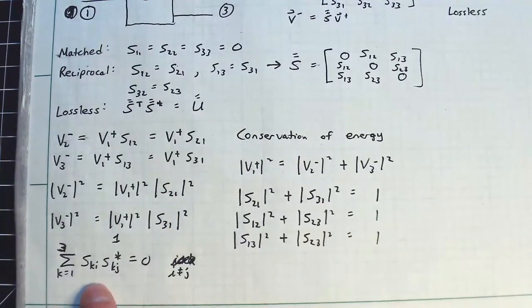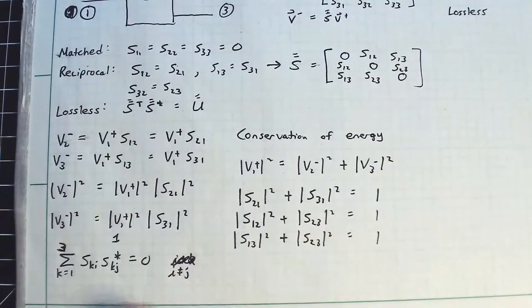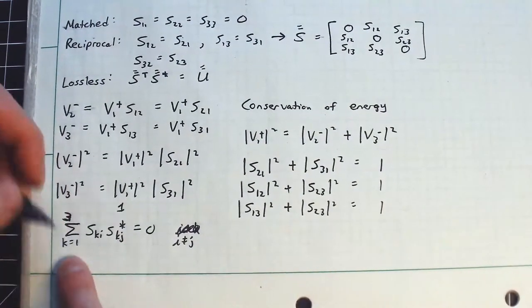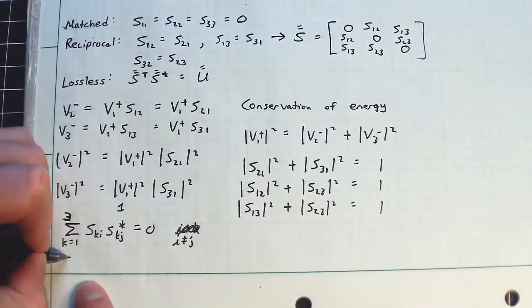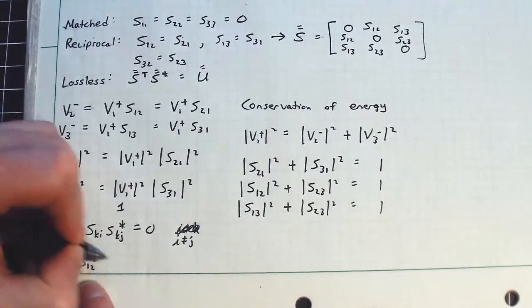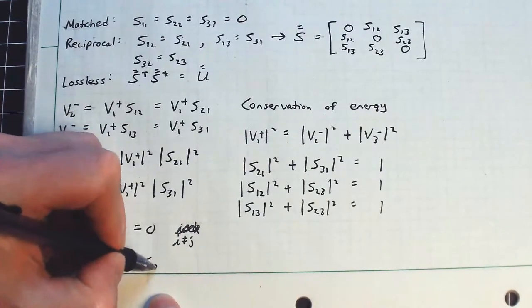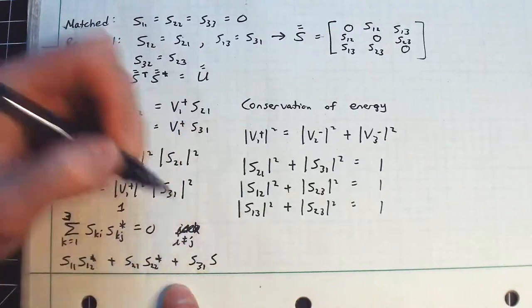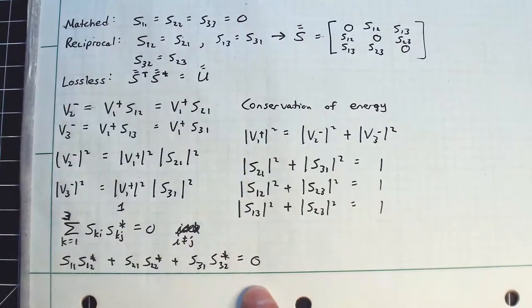So when I equals J, they basically have to add up to give you one, which is this statement here. And all these cross terms in these matrices have to add up to give you zero. So what we'll do is we'll just write out an example here. You'll notice I'm going to pick I equals one and J equals two. So this implies S11 times S12 conjugate plus S21S22 conjugate plus S31S32 conjugate is equal to zero.